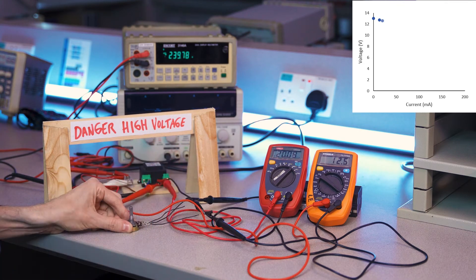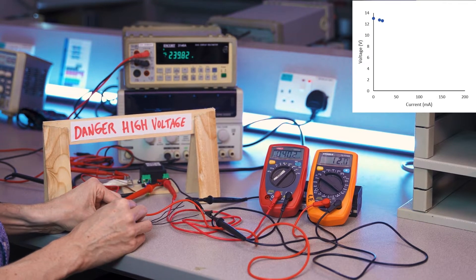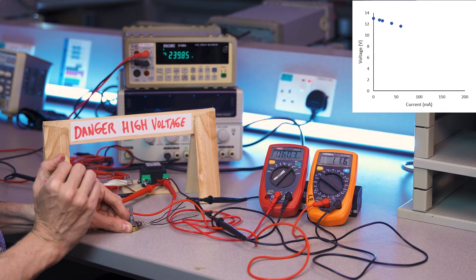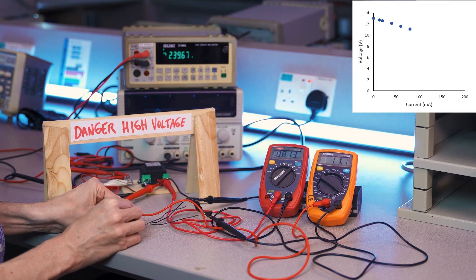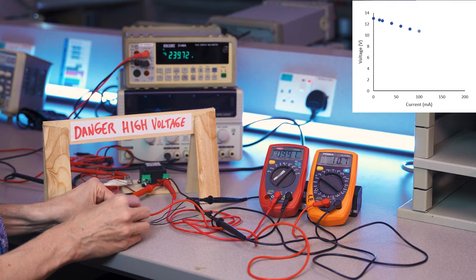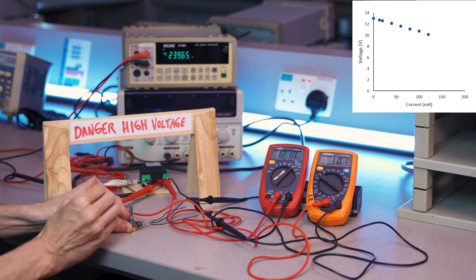At 20 milliamps, we're at 12.6 volts. Let's reduce it some more. At 40 milliamps, we're at 12.1 volts. At 11.6 volts. 11.1 volts. At 100 milliamps, we're at 10.7 volts. 10.1 volts.